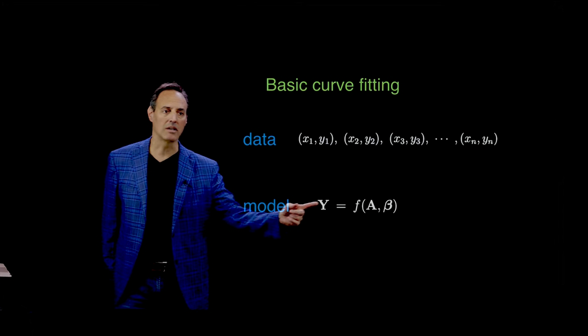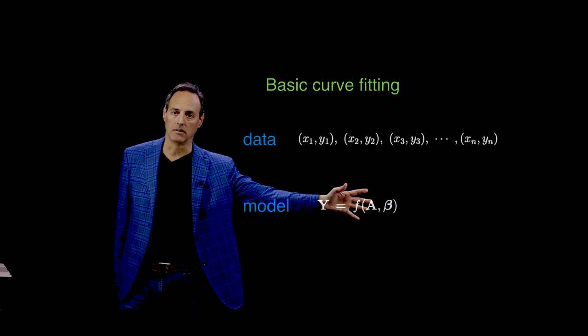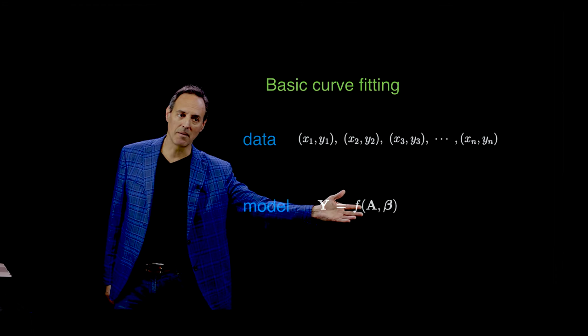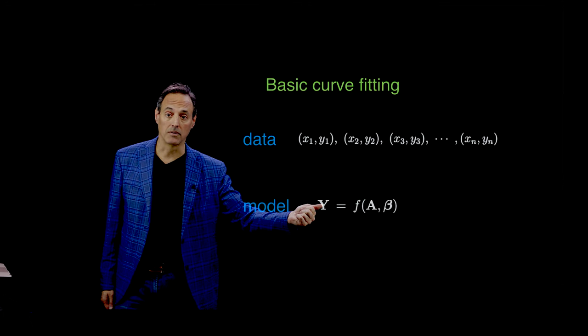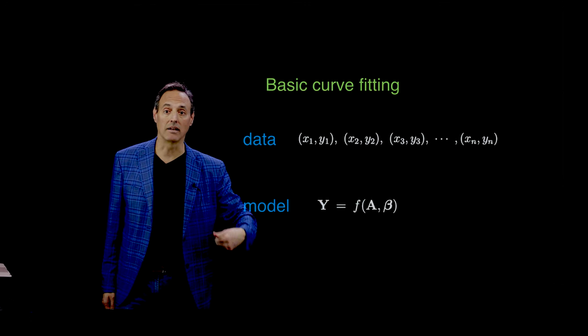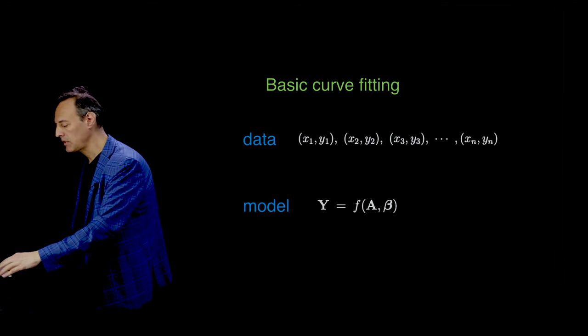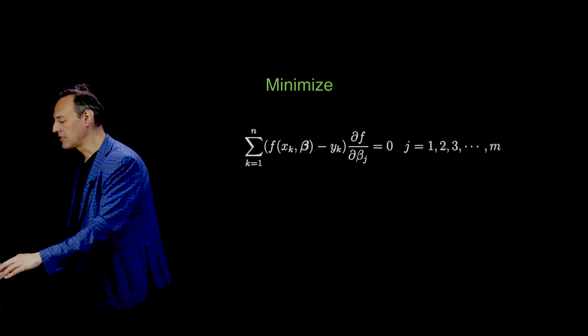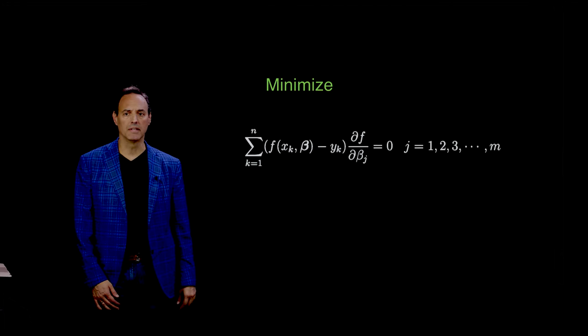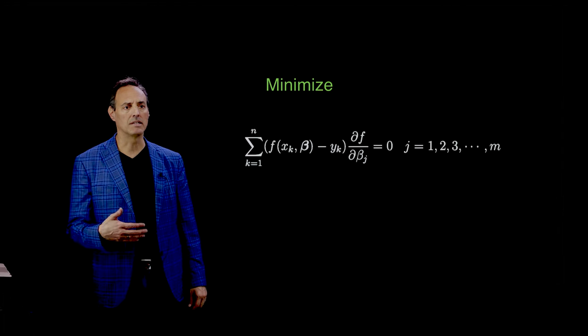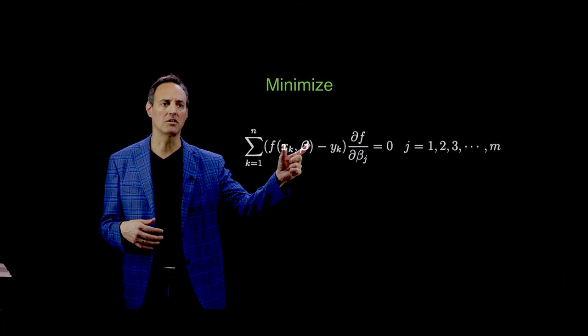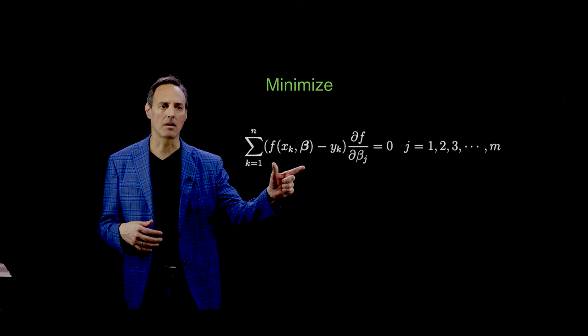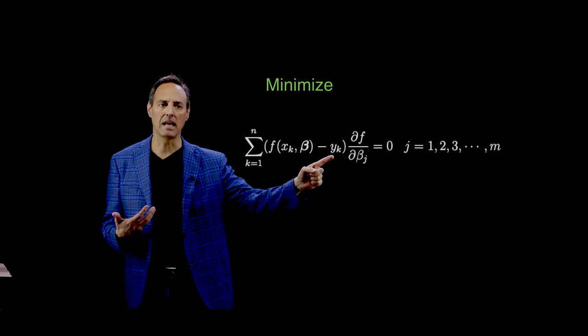Generically, we now have a nonlinear model here. Minimizing this with respect to beta is much more difficult. You don't have closed analytic expressions. I want to think about how you would minimize this.